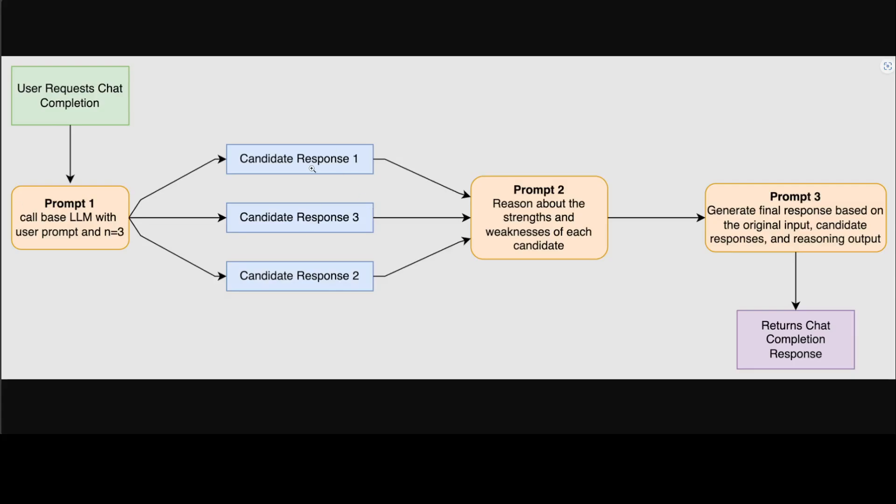Then you see there are three candidate responses. From there, there is a prompt two that again calls the base model and it passes in the original input again along with the three candidate completions generated by prompt one. It then asks the LLM to review the candidate completions and critique them.